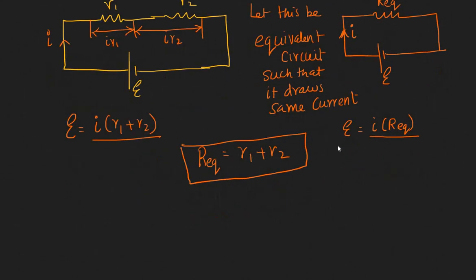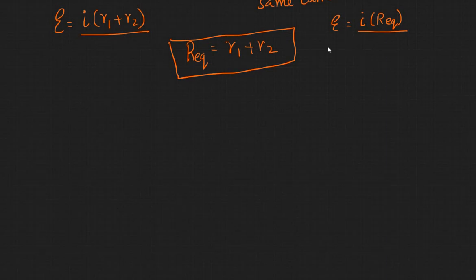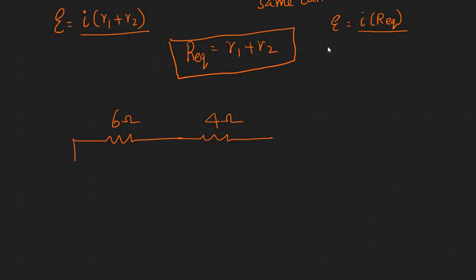So this helps us to solve problems with a lot more ease. For example, if I were to give you another problem wherein you have a 6 ohm resistor and a 4 ohm resistor, this is connected across a 5 volt battery.